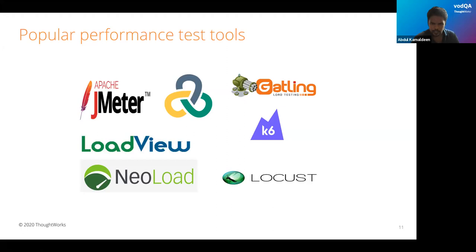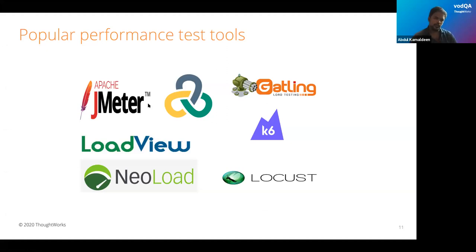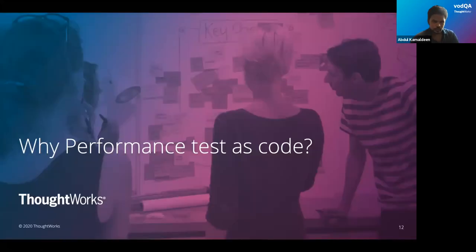Scripting-based tools include Gatling, K6, and Locust. Gatling is based on Scala, K6 is based on JavaScript, and Locust is based on Python. Each has different advantages and disadvantages, but based on your application ecosystem and tech stack, you can choose the tool closest to your existing technologies. The whole approach is to keep performance tools close to your ecosystem.